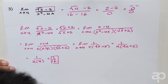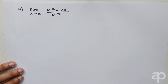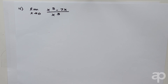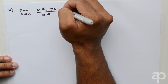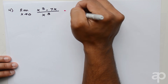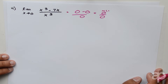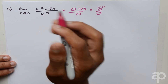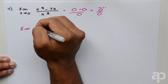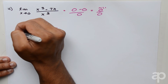So the limit of square root of x minus 2 over x squared minus 4x as x approaches 4 is 1 over 16. The last problem asks us to evaluate the limit of x cubed minus 7x over x cubed as x approaches 0. Substituting 0 gives 0 minus 0 over 0, which equals 0 over 0 — the indeterminate form. Since there is only one term in the denominator, we can split the numerator into two fractions.